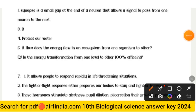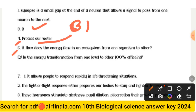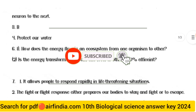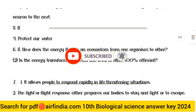The answer to question three is option B. The answer to the slogan question (question four) is: 'Protect our water.' For question six, point one: How does energy flow in an ecosystem from one organism to another? Point two: Energy transformation from one level to another is not 100% efficient.